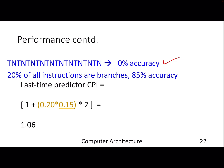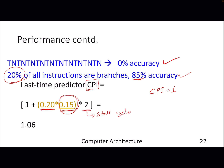Let's look at performance. Assume 20% of instructions are branches and the branch predictor has 85% accuracy. The ideal pipelined CPI is 1. Due to branch mispredictions, stalls are added. For 20% of instructions being branches, the predictor mispredicts 15% of the time. For each misprediction, two stall cycles are added (since we resolve branches at the end of execute). This yields CPI = 1 + 0.20 × 0.15 × 2 = 1.06, which is worse than the ideal CPI of 1.